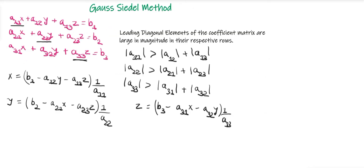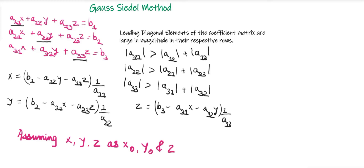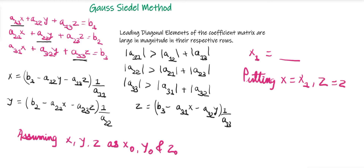Our next step is to start the first iteration, where we assume x0, y0, and z0 equal to 0. Once we have the value of x1, our next substitution takes x = x1 and z = z0 to find y1. This is where the Gauss-Jacobi method and Gauss-Seidel method differ.